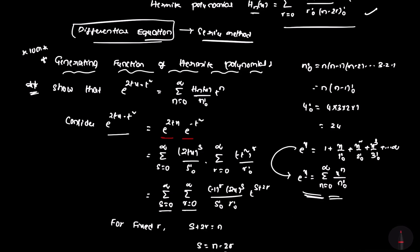To summarize the proof: e to the power (2tx minus t squared) equals e to the power 2tx times e to the power minus t squared. Using the exponential theorem, this gives a double summation in s and r, where the power of t is s plus 2r.